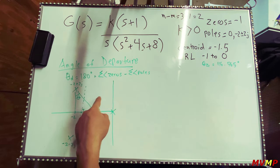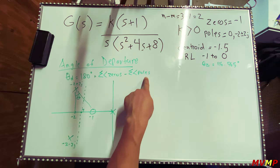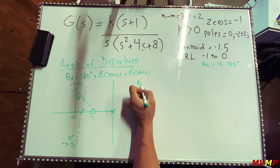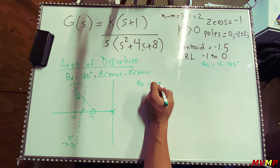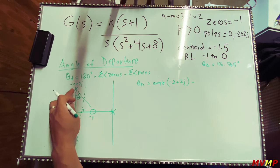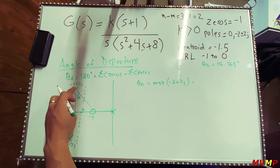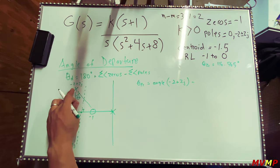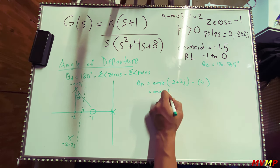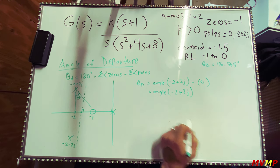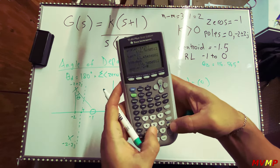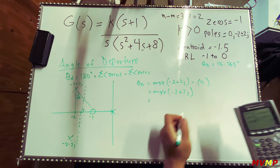Now we compute the angles of the other poles with respect to the departing pole at negative 2 plus 2j. Subtracting the pole at zero gives negative 2 plus 2j, and using the calculator's angle function you get 135 degrees. By hand: the triangle has opposite length 2 and adjacent length 2, so inverse tangent of 1 is 45 degrees, and 180 minus 45 equals 135 degrees.